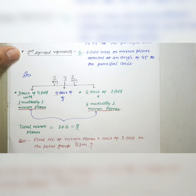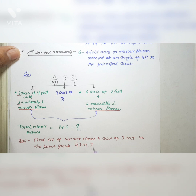Here is a practice question: find the number of mirror planes and axes of threefold in the point group -4 3m. Please solve this and tell me in the comment section how many mirror planes and how many threefold axes are present in this point group.